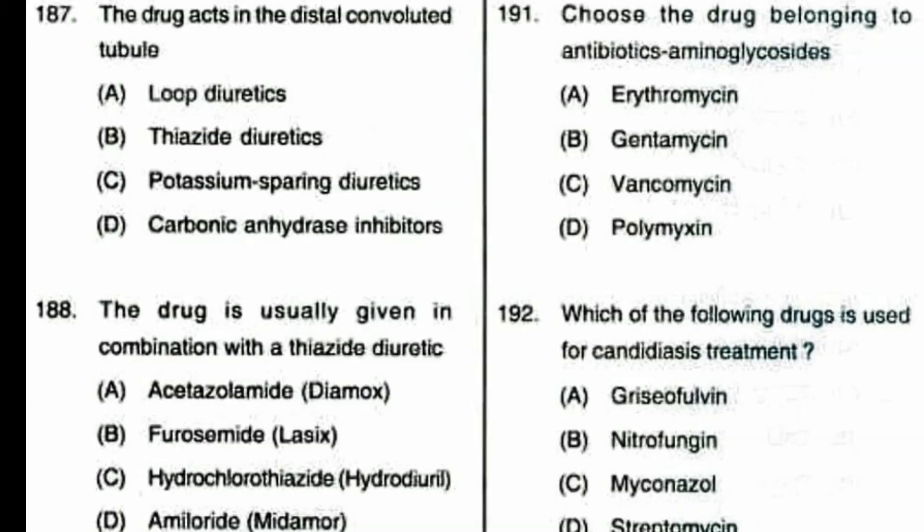Question number 187: which drug acts in the distal convoluted tubule? Among the following options, which diuretic acts in the distal convoluted tubule? Option A: loop diuretics, B: thiazide diuretics, C: potassium-sparing diuretics, D: carbonic anhydrase inhibitors. Option A is the correct answer — loop diuretics.